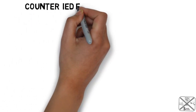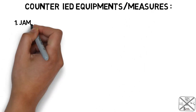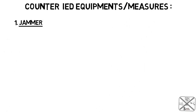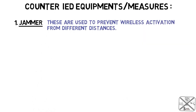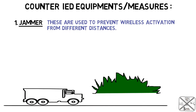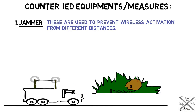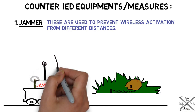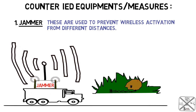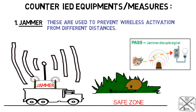Now we will discuss counter-IED equipment and measures. First is the jammer, which is used to prevent wireless activation from different distances. The jamming signal is designed to be stronger than the bomb maker's transmitter signal to block the bomber's ability to communicate with the device. This can also be carried along with a vehicle within a convoy, but jammers can only counter remotely detonated IEDs.